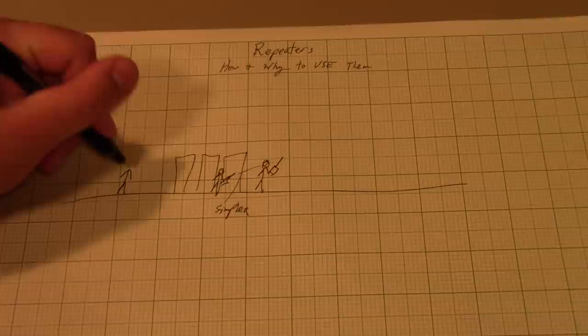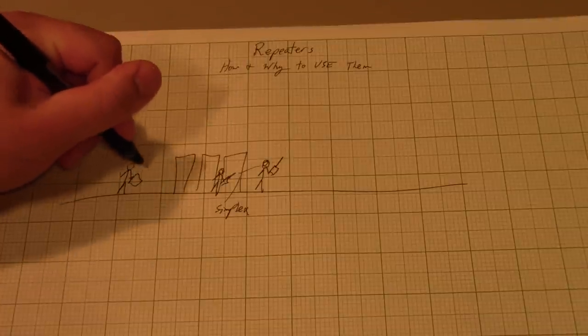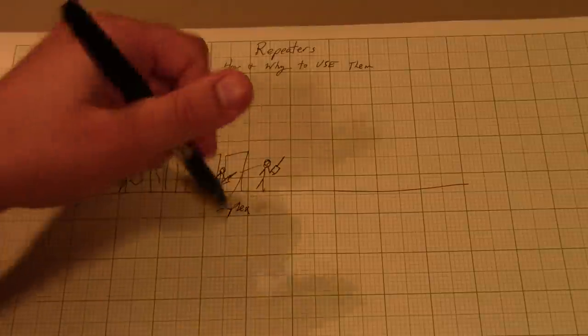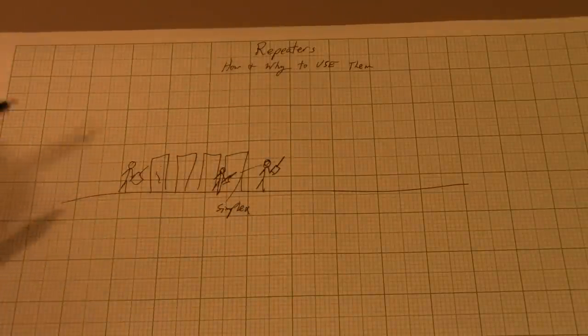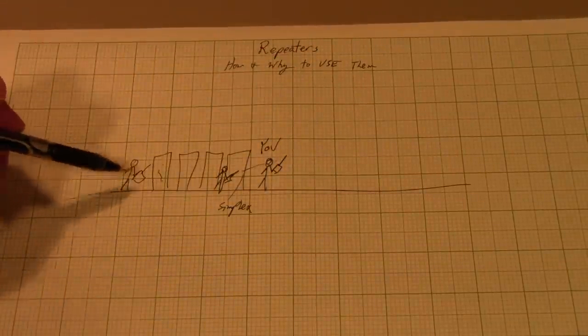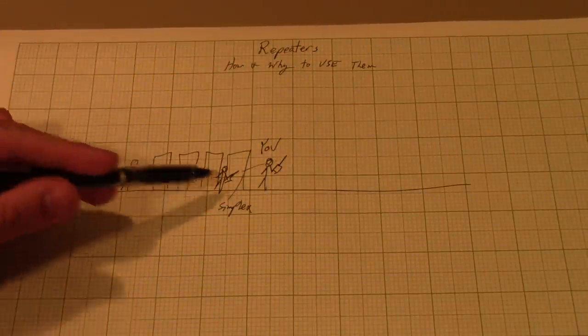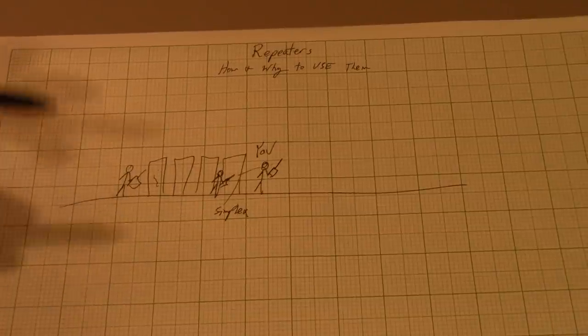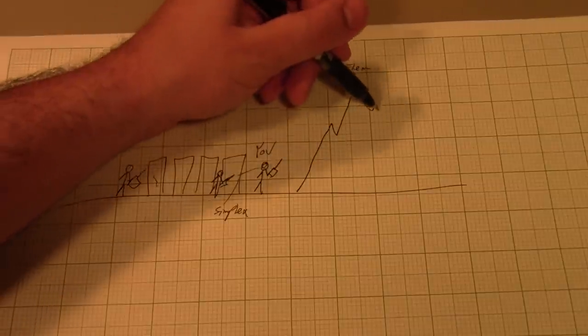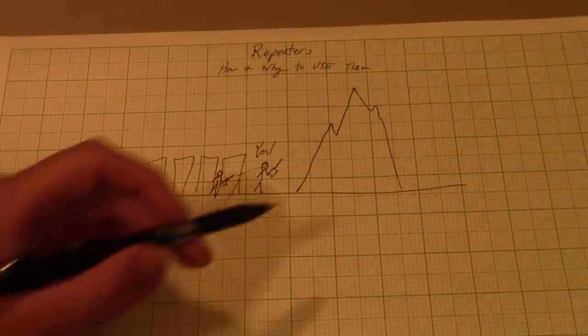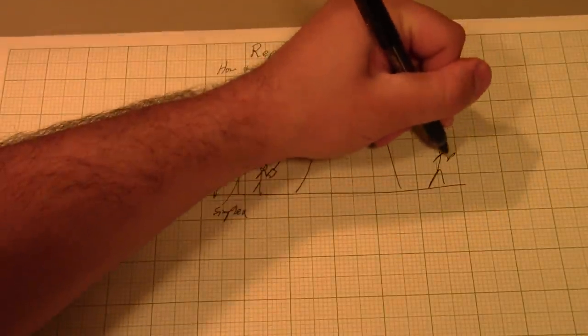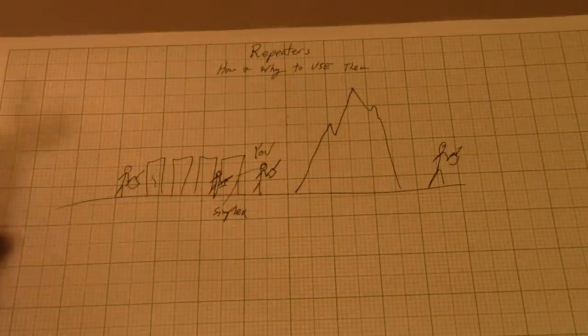If you had someone over here on the other side of several of these buildings, here's some more buildings, these are skyscrapers, you know, not drawn to scale. If this is you, you likely couldn't talk to this person on the other side of town just because there's a bunch of buildings in the way. The classic example that people also use is mountains.